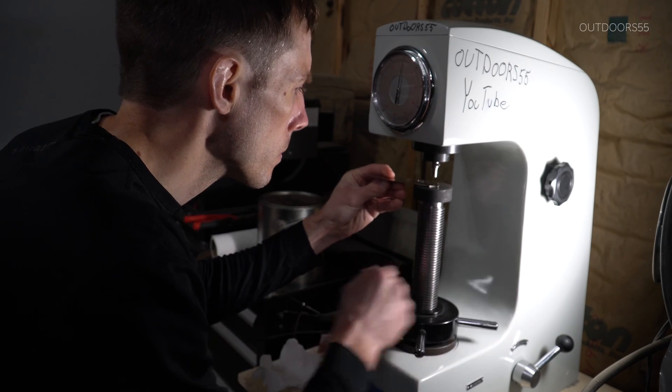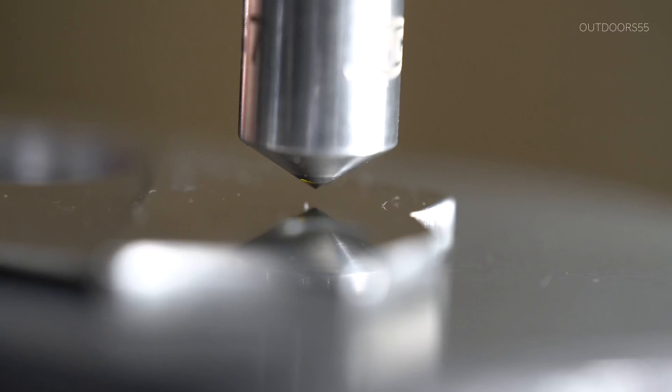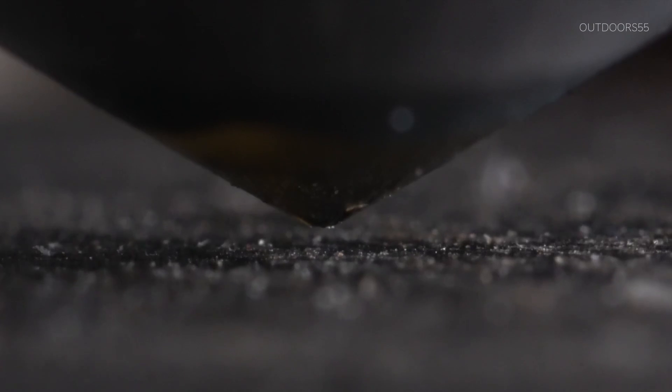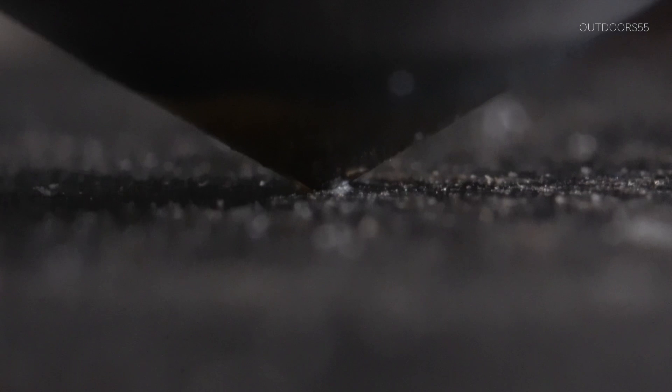The Rockwell hardness tester works by pushing a diamond tip penetrator into the steel under a set load. The tester then reads how deep the diamond penetrated into the steel. The harder the steel, the less it penetrates. The softer the steel, the more it penetrates. It's a fairly simple test at its core.